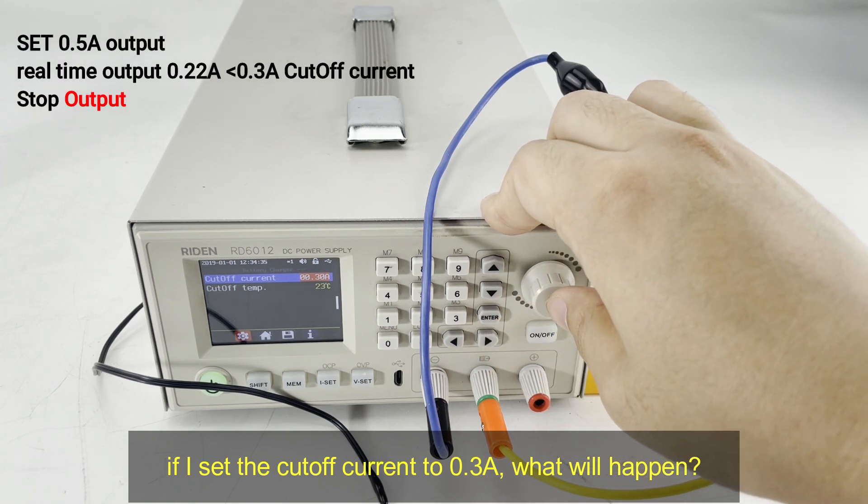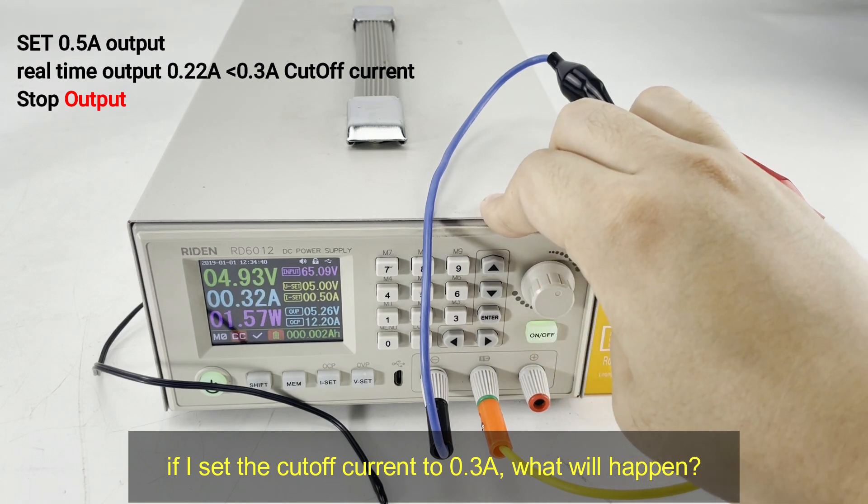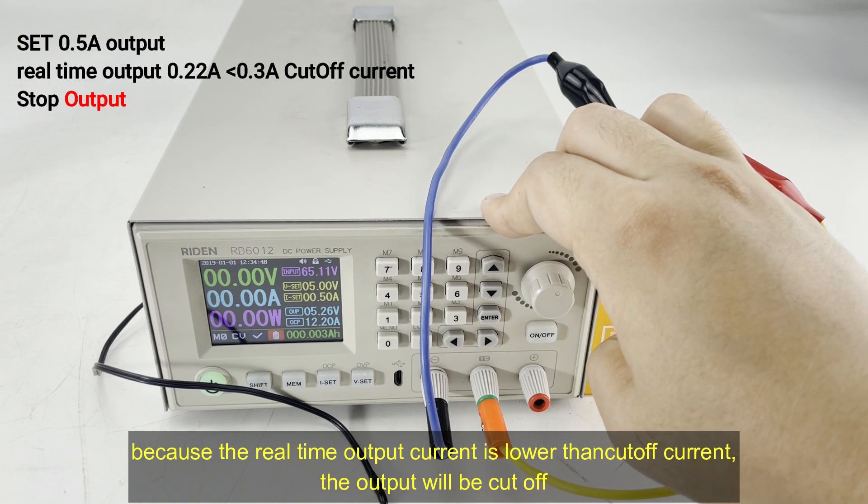0.3 ampere. And then turn on the output. Because the real-time output current is lower than the cut-off current, the output will be cut-off.